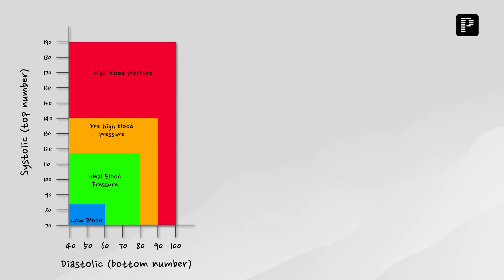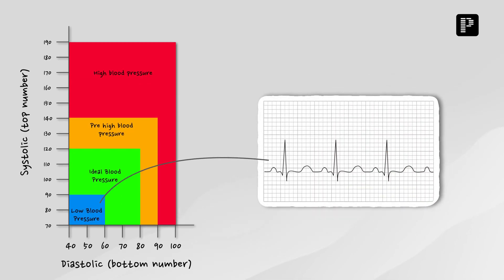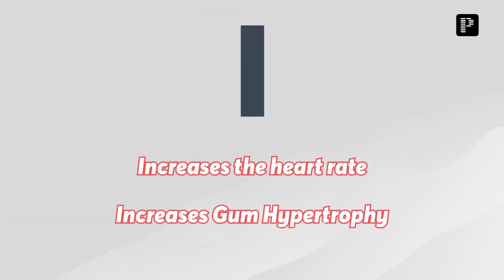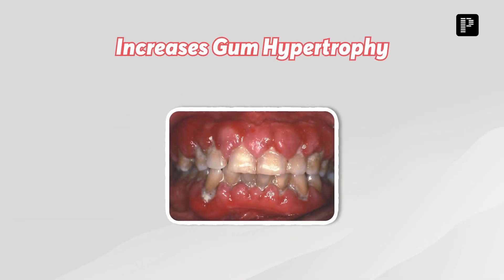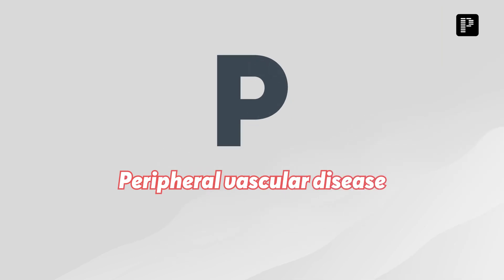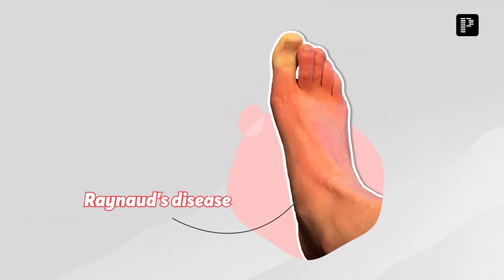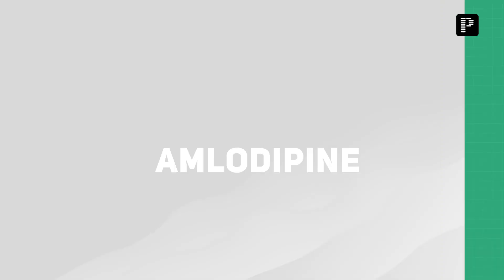I — it increases the heart rate. So whenever the BP falls there is a risk of tachycardia, and this is very mild in amlodipine but more pronounced in nifedipine. It also increases gum hypertrophy. P — for peripheral vascular disease, also called Raynaud's disease. For that, amlodipine or any CCBs are the drug of choice.